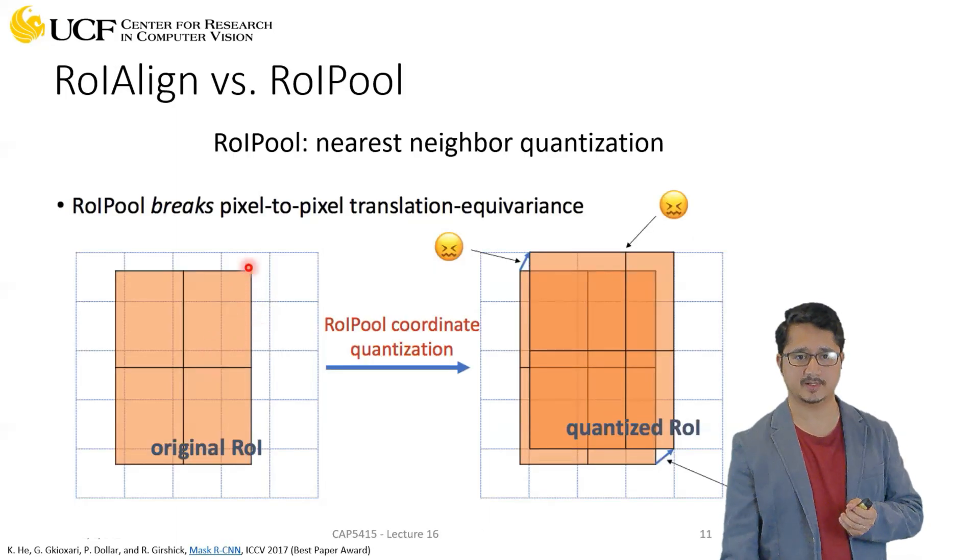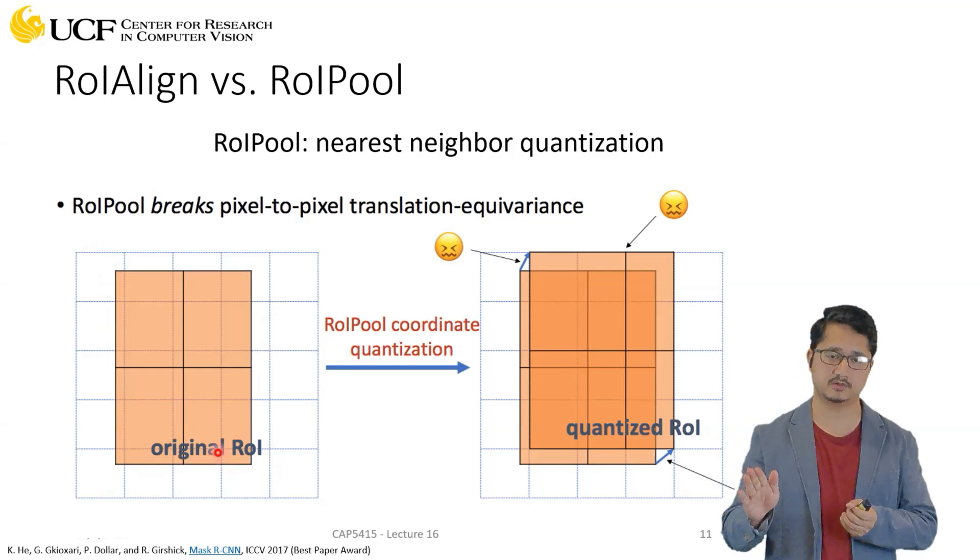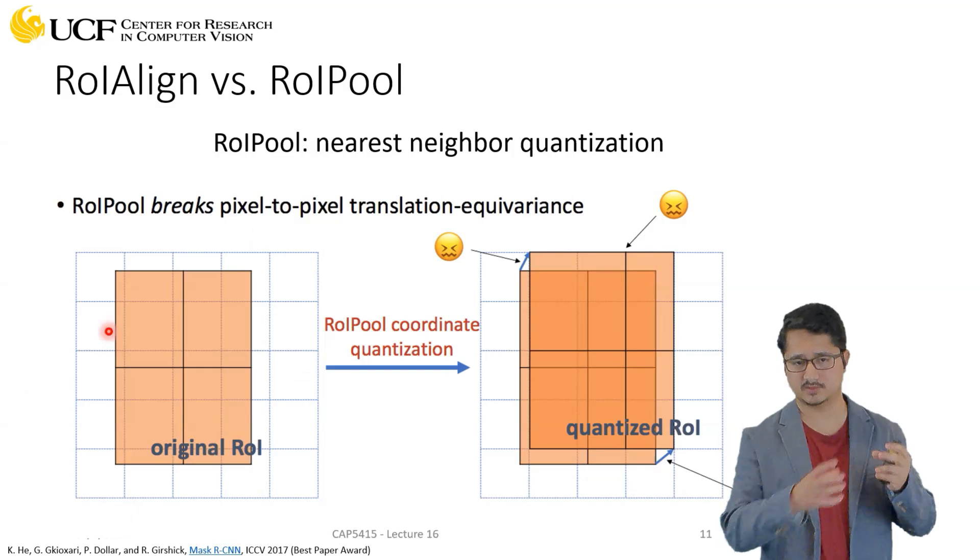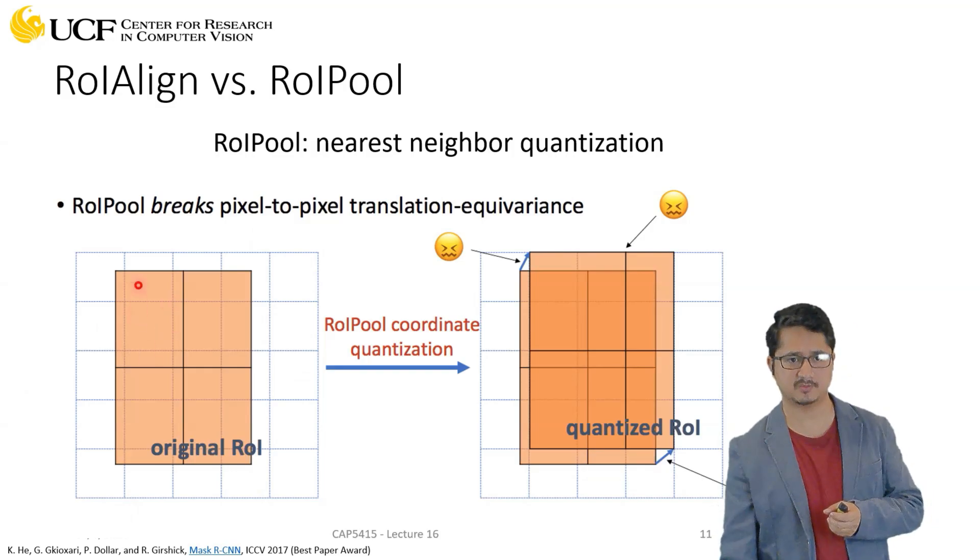Okay, so now if you think about this, let's say this is your ground truth bounding box which is mapped on top of the original image, and let's say your feature map is of size 5x5 or something like this. If you scale your ground truth bounding box, it might look something like this. It won't fit perfectly because this is kind of a discrete feature map.